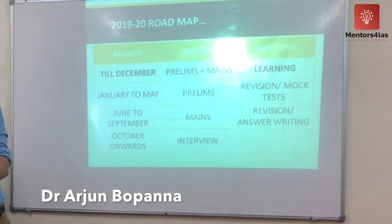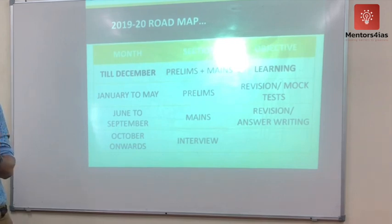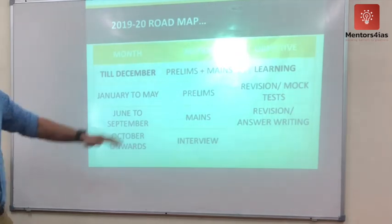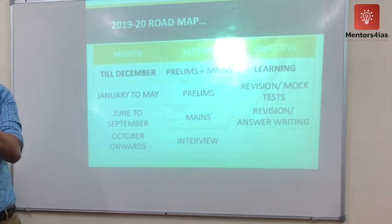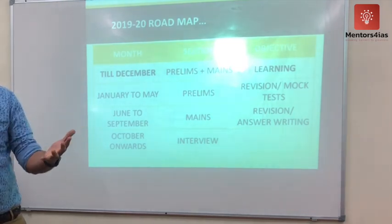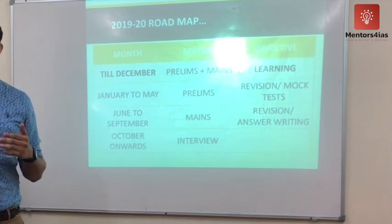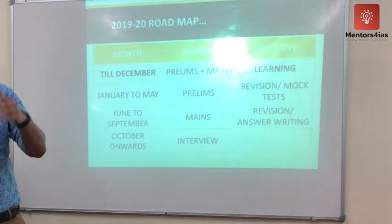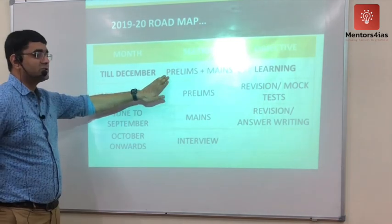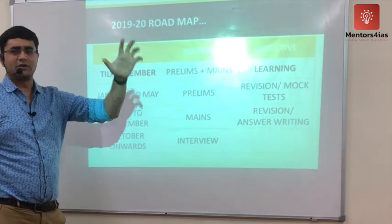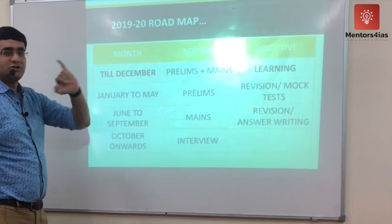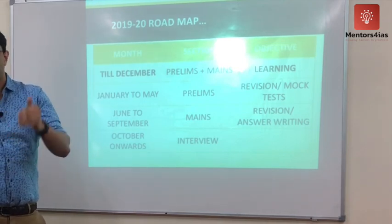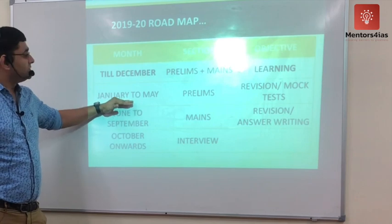You can't go stage by stage — if you do, you'll be prolonging your preparation time. If you want to finish in one year, start your optional and mains along with prelims now. By November-December you should finish your learning. In January to May 2020, you exclusively focus on prelims, revising and giving mock tests.